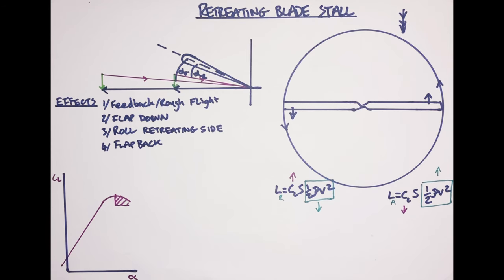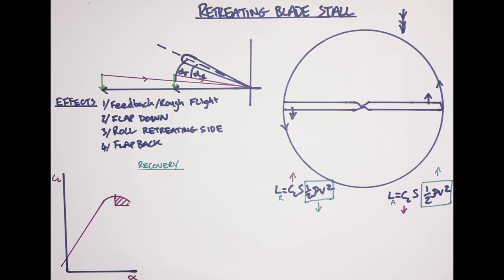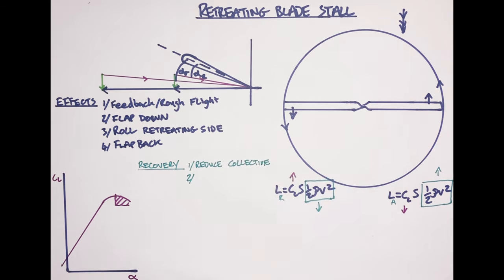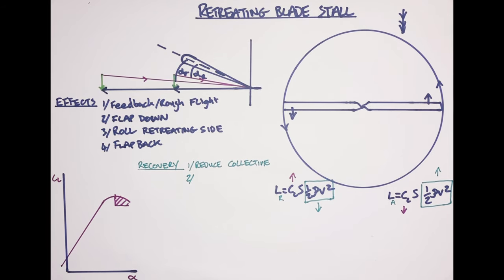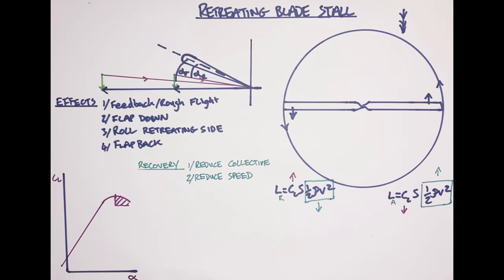How can we get ourselves out of this situation? Quite clearly we have a problem with the pitch on the blade causing a stall, so the first action is to reduce the power. The other contributing factor is the decrease in dynamic pressure, so we also need to reduce the speed. That should bring you out into a slightly more stable element of flight.